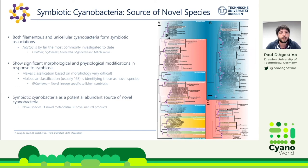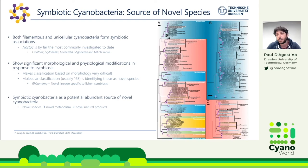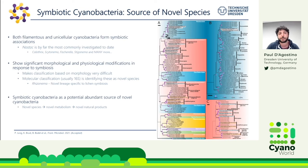Both filamentous and unicellular cyanobacteria are known to form symbioses, but Nostoc is by far the most commonly investigated. My collaborator Patrick Jung recently had a paper accepted identifying many different types of cyanobacteria from symbiotic systems, suggesting huge diversity. Symbiotic cyanobacteria show significant morphological and physiological modifications in response to symbiosis, making them traditionally difficult to classify based on morphology alone. Moving toward molecular methods, novel species are being found — Rhizonema is one example. The idea is that symbiotic cyanobacteria are a source of novel species, novel metabolism, and therefore novel natural products.